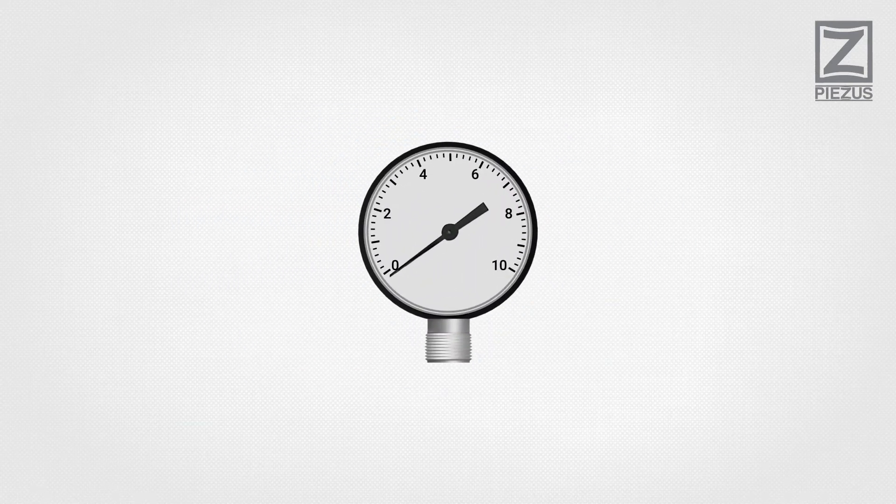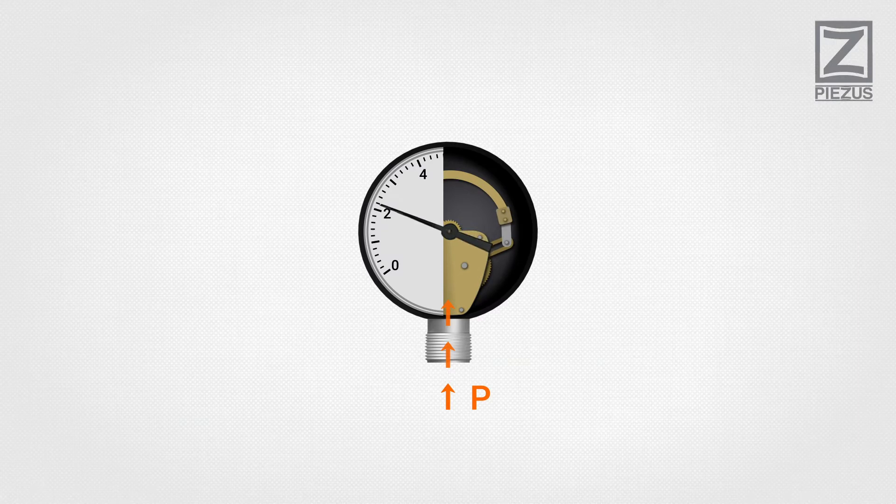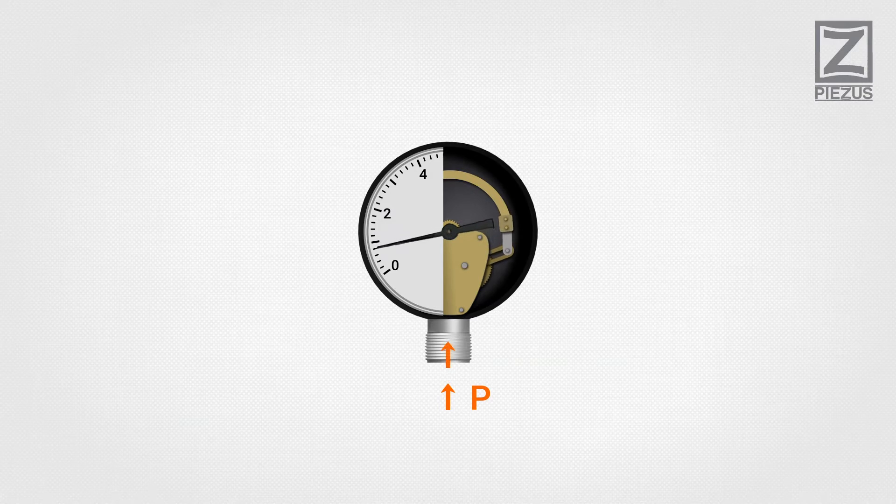Mechanical pressure gauges operating principle: A pointer connected to a sensing element starts to move when the pressure is applied. A dial allows you to see the pressure value at the moment.